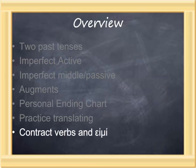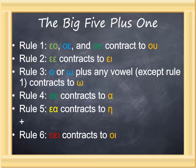The patterns introduced in this lesson also apply to contract verbs and eimi. Let's recall the rules of contraction. Rule 1: epsilon-omicron, omicron-epsilon, or omicron-omicron contracts to u. Rule 2: double epsilon contracts to epsilon-iota. Rule 3: omicron or omega plus any other vowel except those in rule 1 contracts to omega. Rule 4: alpha plus epsilon contracts to alpha. Rule 5: epsilon plus alpha contracts to eta. Rule 6: omicron, epsilon-iota contracts to omicron-iota. Look for these rules being applied in the next couple of charts.